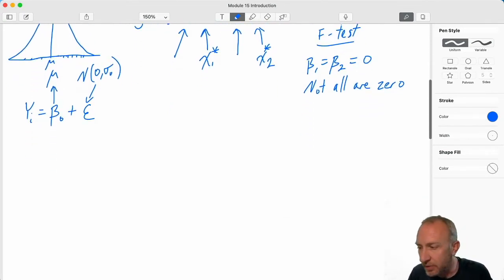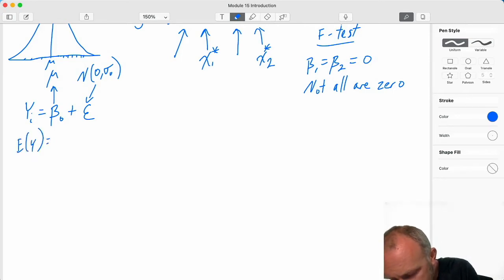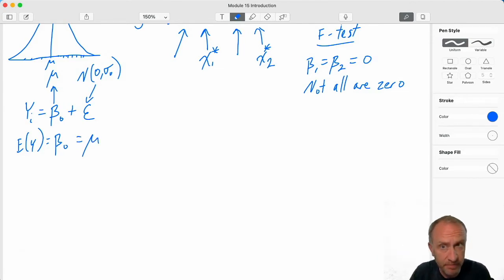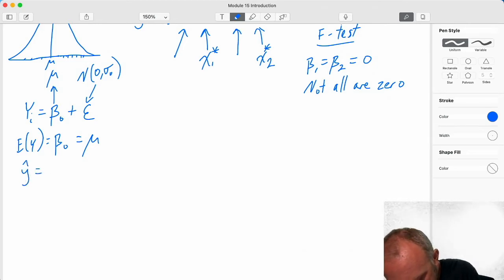Then we went through and we estimated that unknown population mean mu. We thought, if we take the expected value of that, that's just beta 0. And of course the expected value, beta 0, that was mu again, that unknown population mean. We predicted that with y hat.